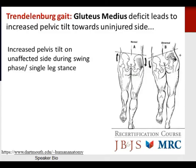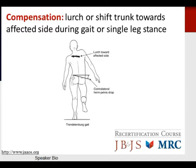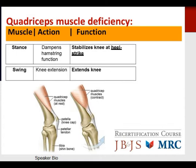Trendelenburg gait is a commonly discussed and examined abnormal gait associated with gluteus medius deficiency. The gluteus medius is deficient, leading to increased pelvic tilt toward the uninjured side during swing phase and single-leg stance. This leads to a compensation: a lurch or shift of the trunk toward the affected side during gait or single-leg stance, done to level the body in response to the weak gluteus medius.